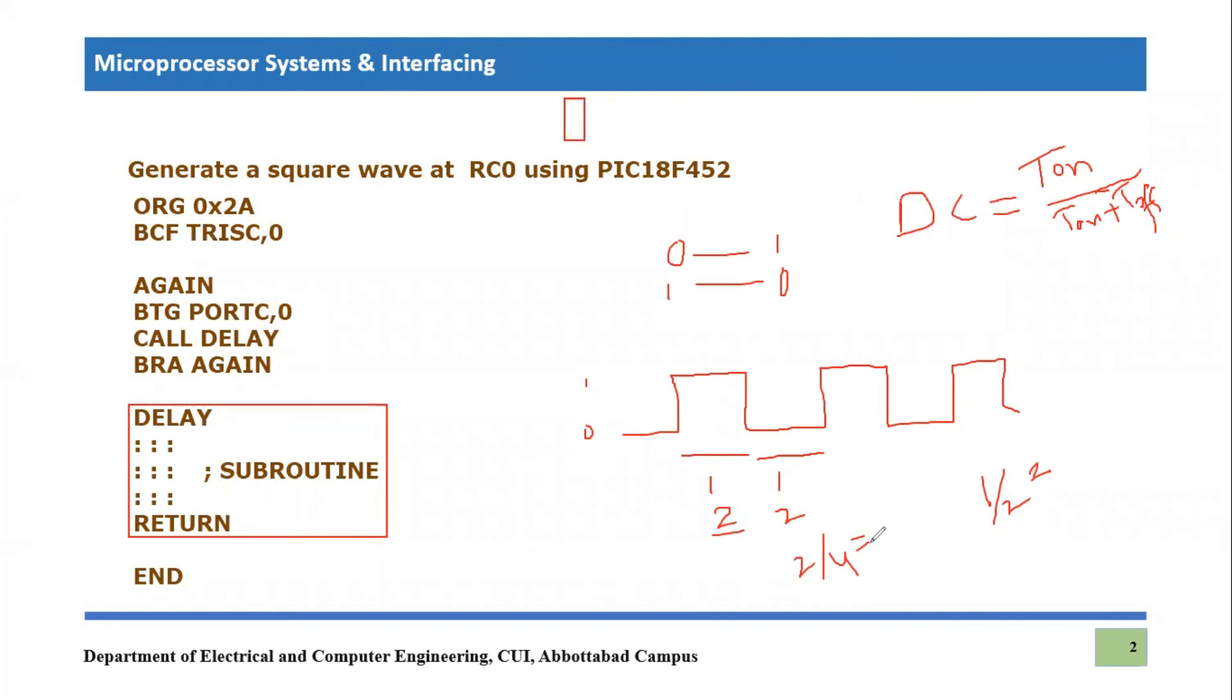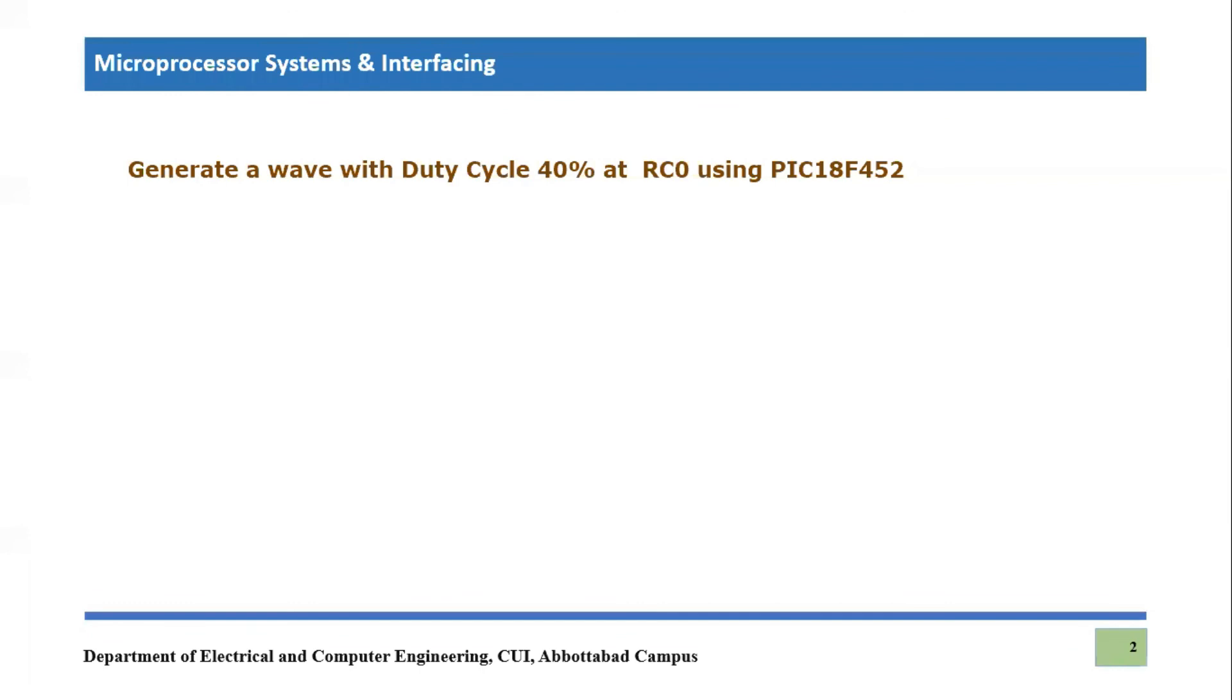Let's consider another example. In this example, what we are asked to do: generate a wave with a duty cycle of 40% at RC0. So remember we discussed a 50% duty cycle wave, which is a square wave generally. So now we are asked to design a wave or generate a wave at the same pin of the 18F452 and we will be generating it with a duty cycle of 40%.